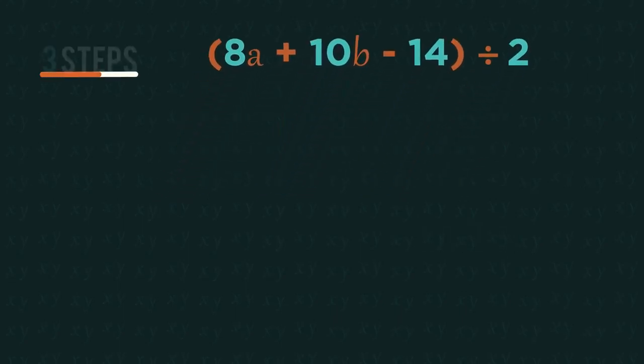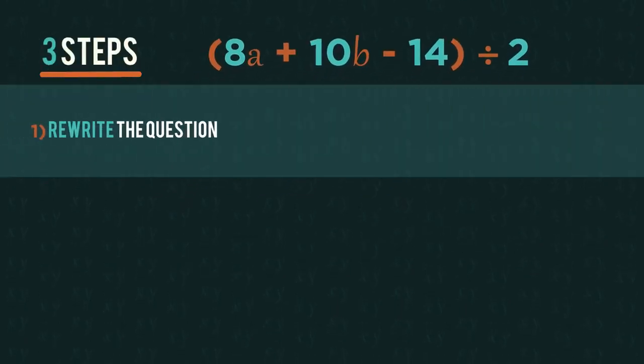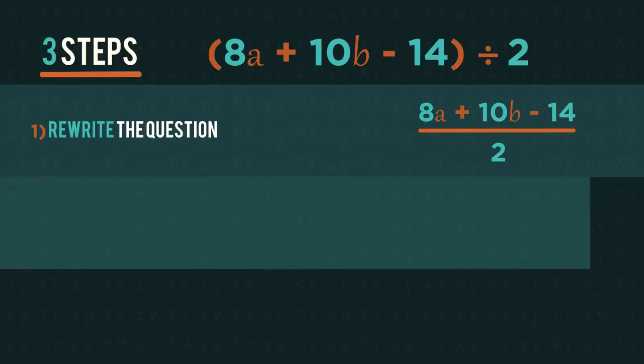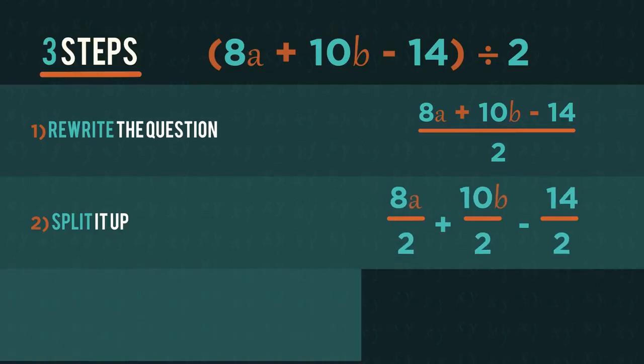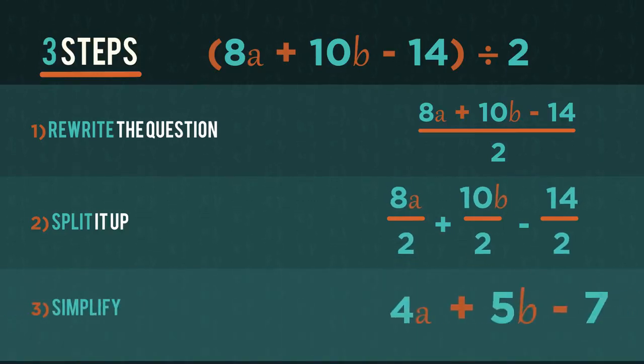There are three simple steps to follow. Firstly rewrite the question as a fraction and then split the problem into pieces by writing each term over the denominator and finish by simplifying each term.